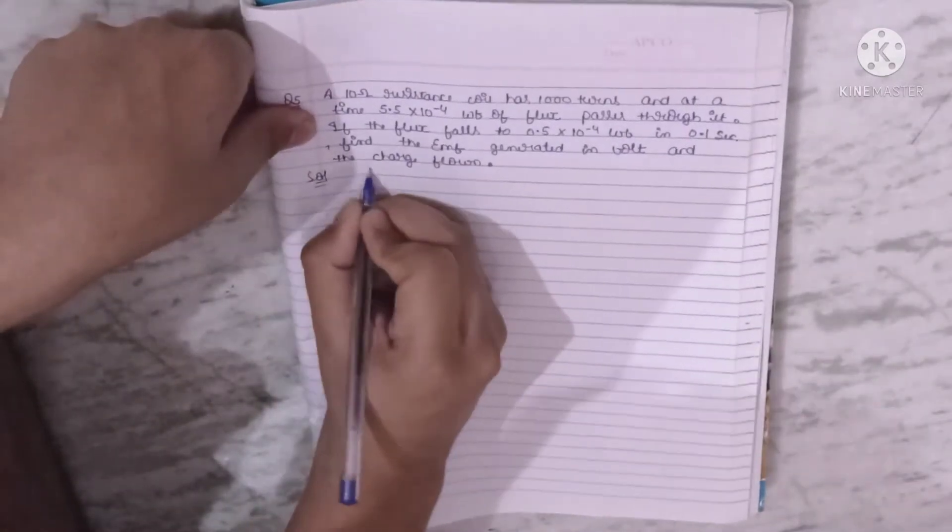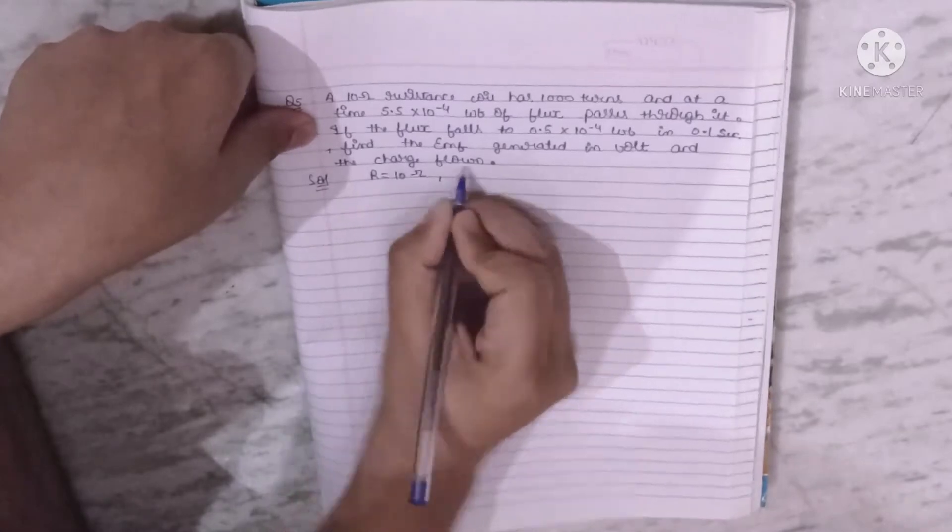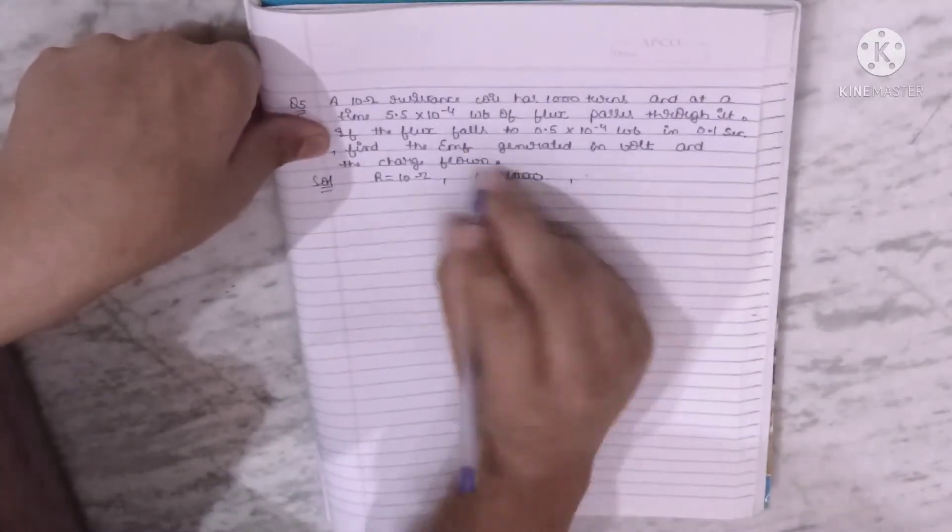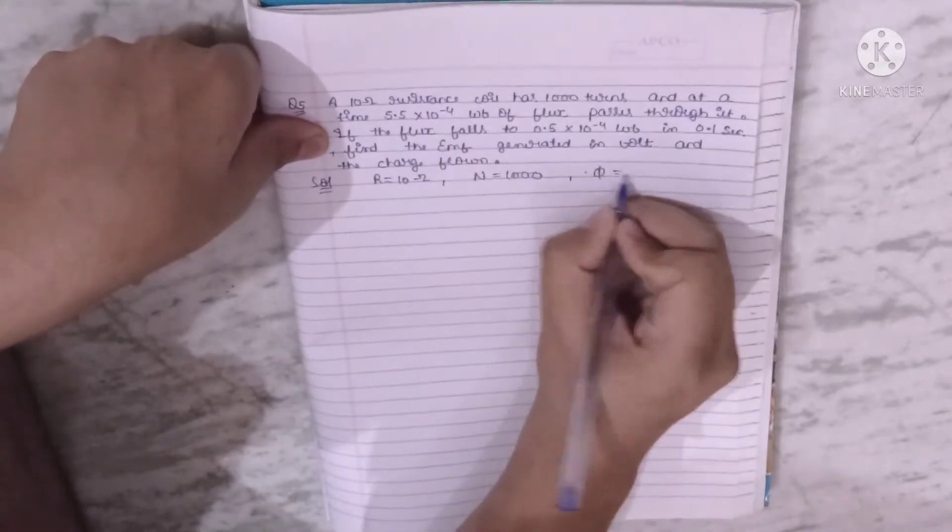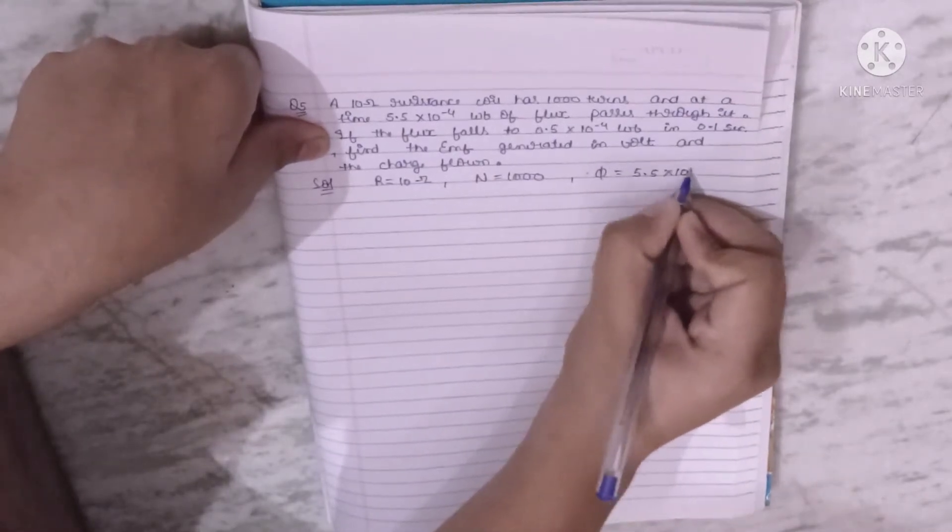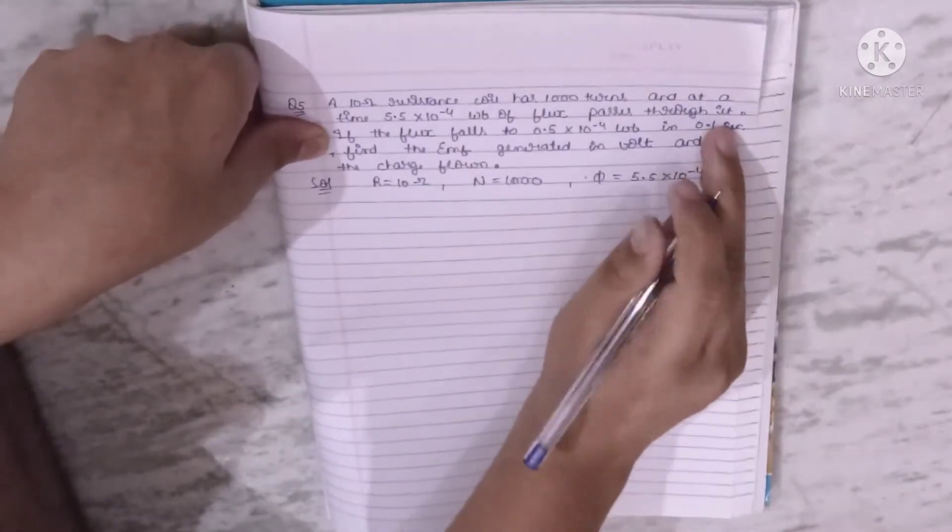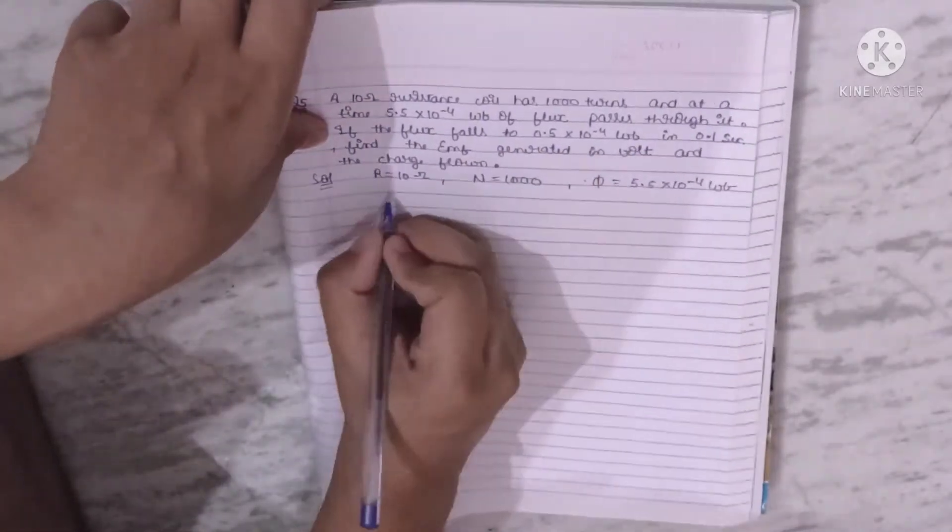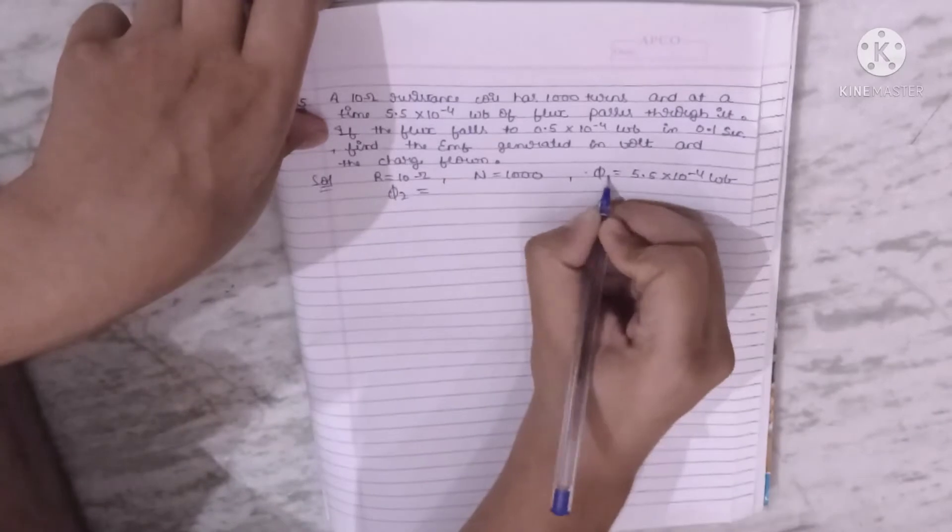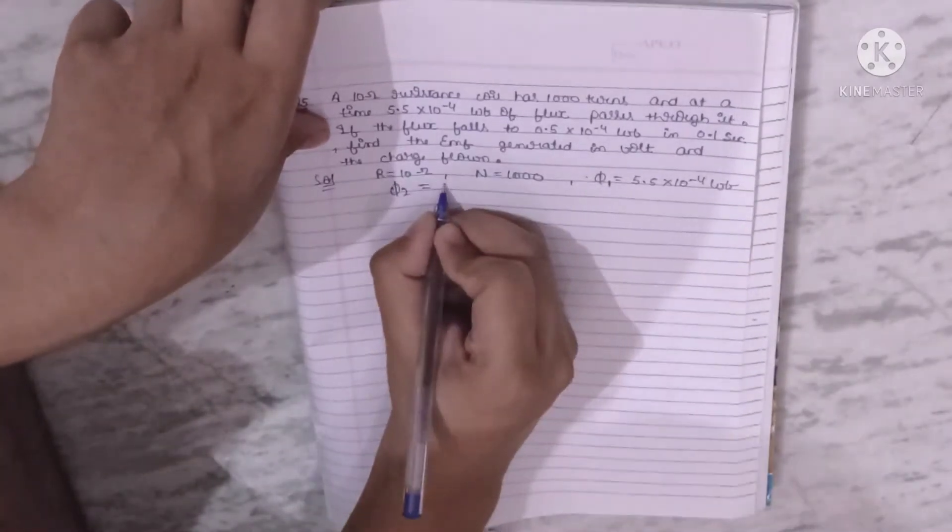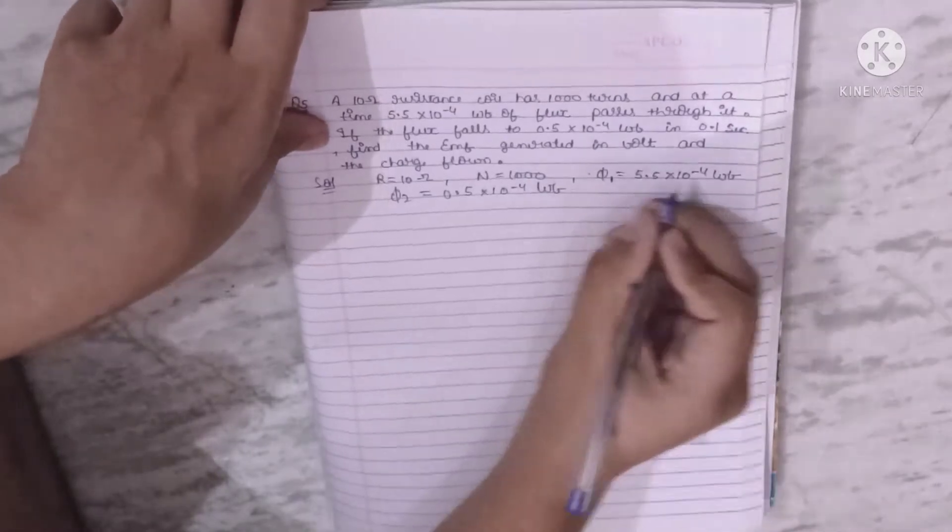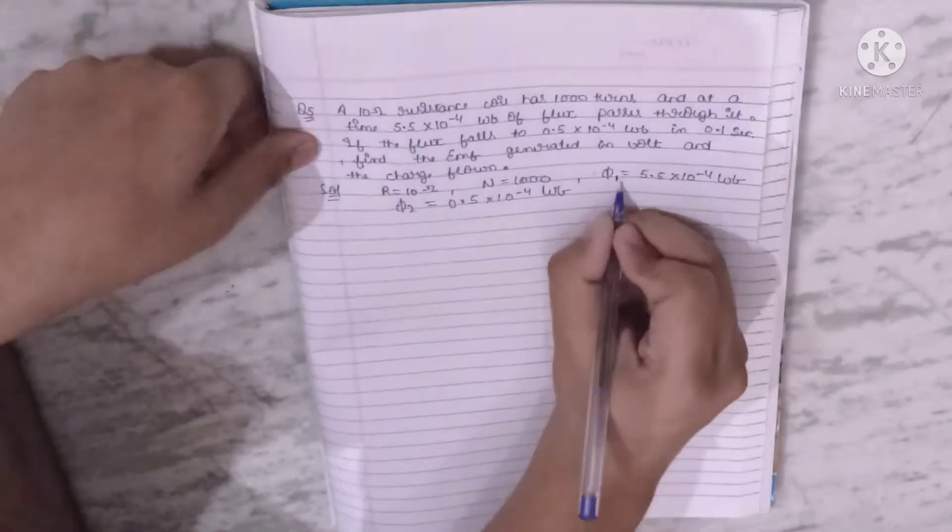So we have resistance 10 ohm, number of turns 1000, and flux 5.5 into 10 to the power minus 4 weber passes through it. If the flux falls to 0.5 into 10 to the power minus 4 weber, now we have flux 2. Second flux also gives us 0.5 into 10 to the power minus 4 weber in 0.1 second.